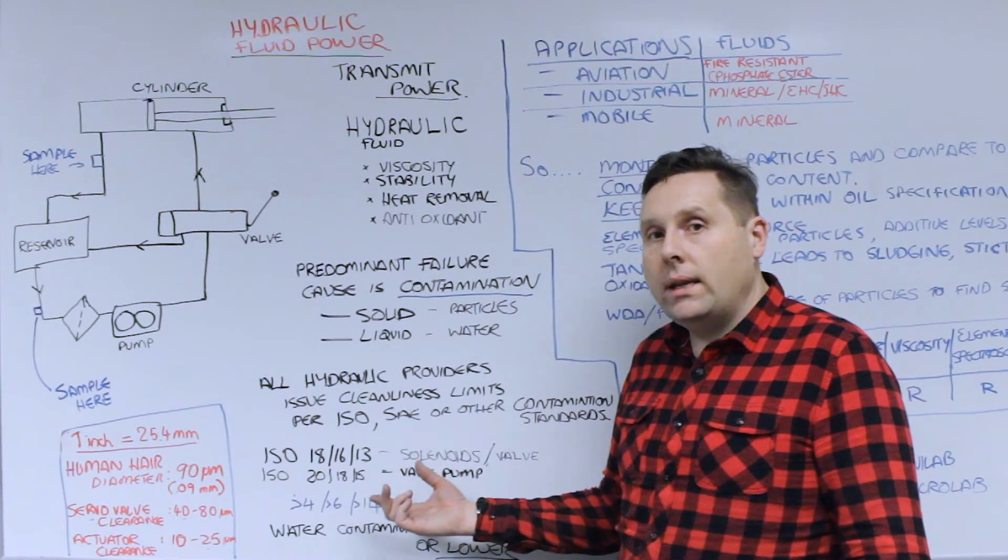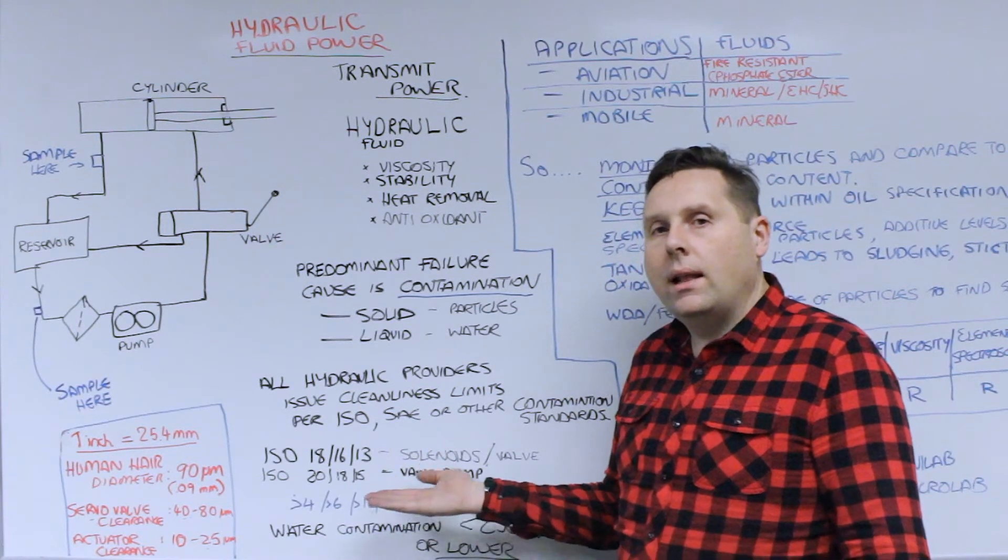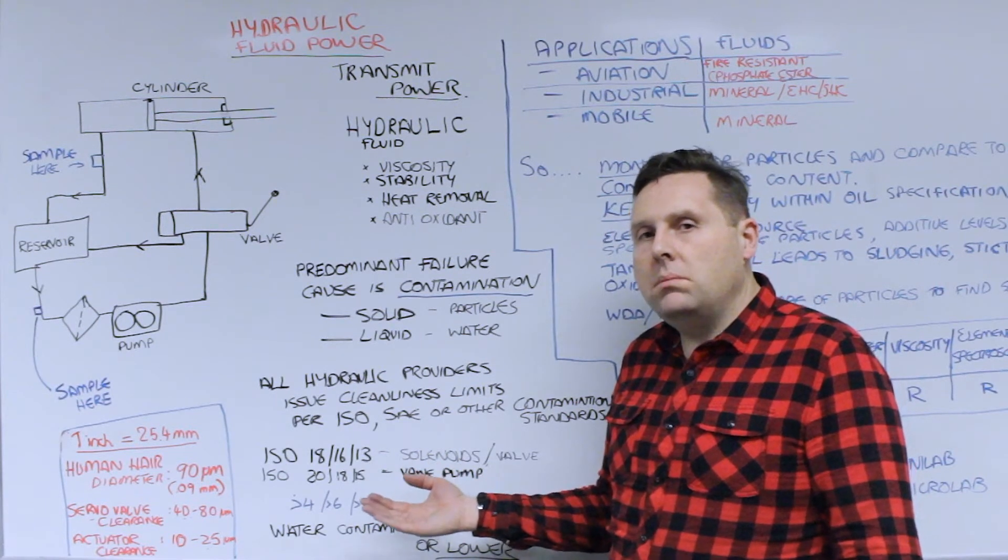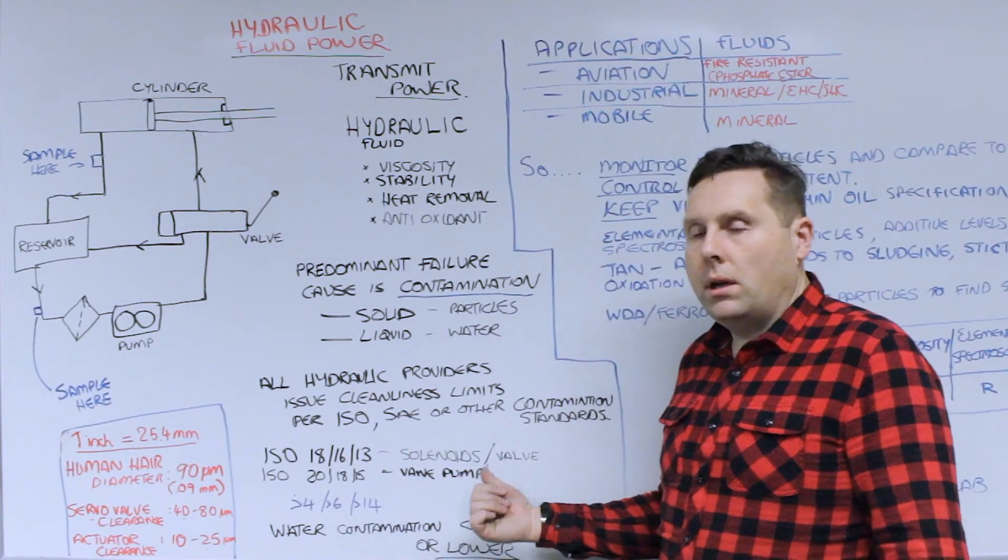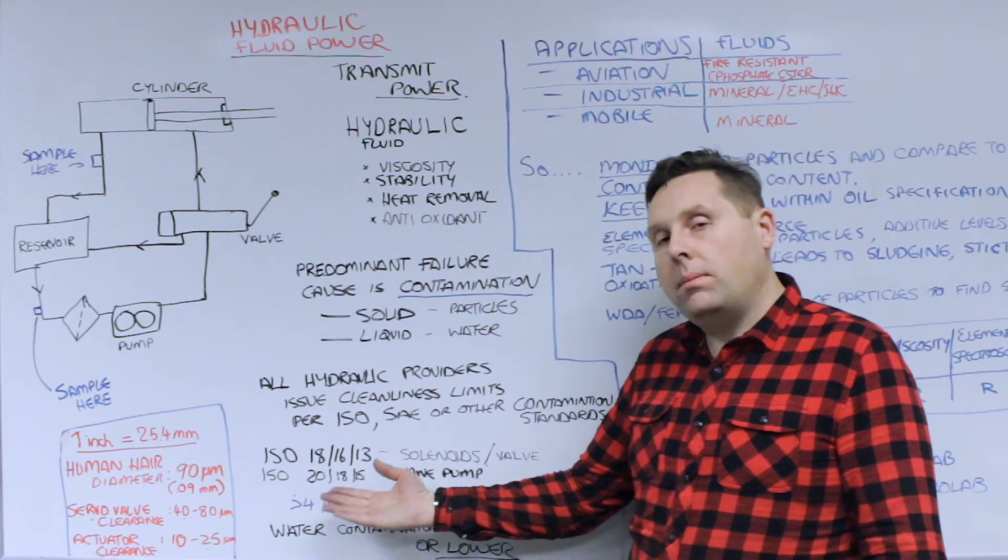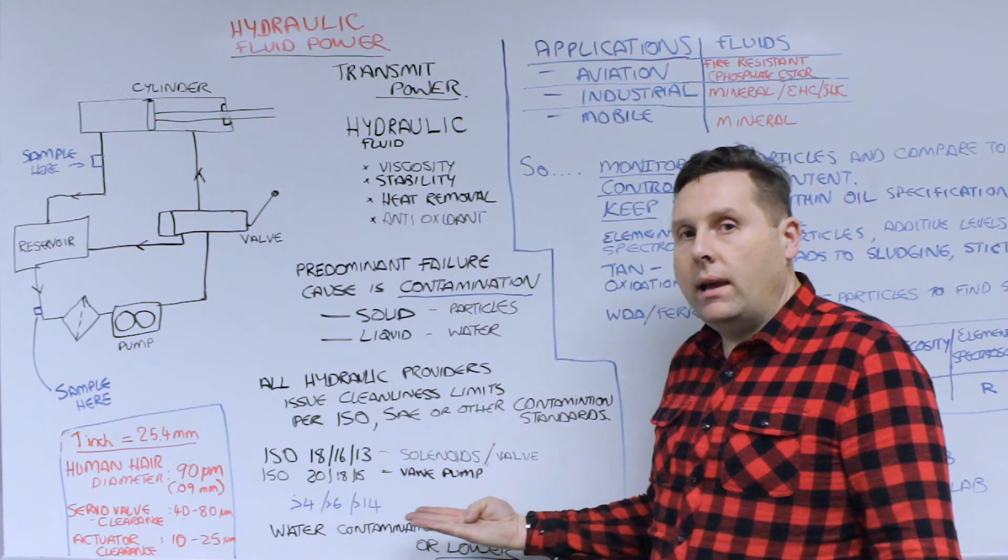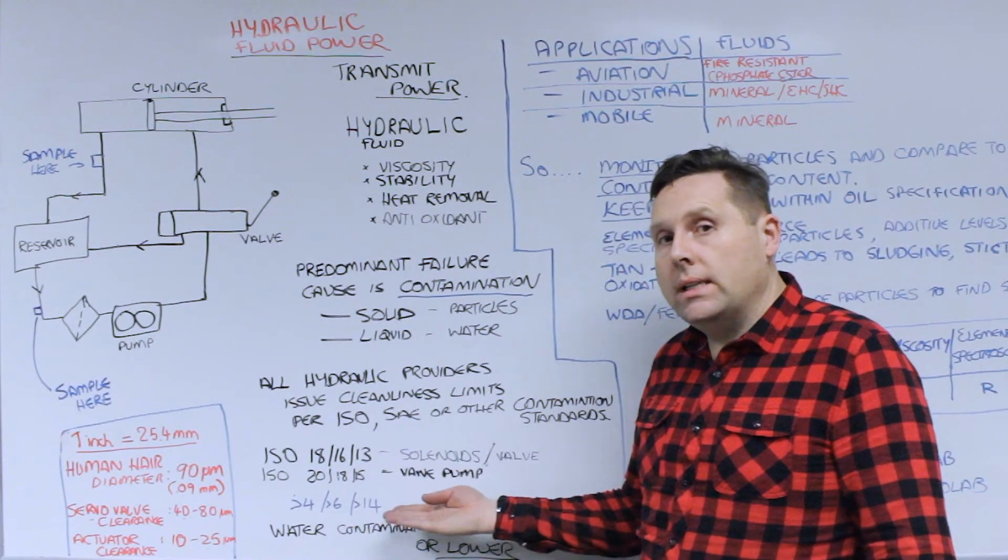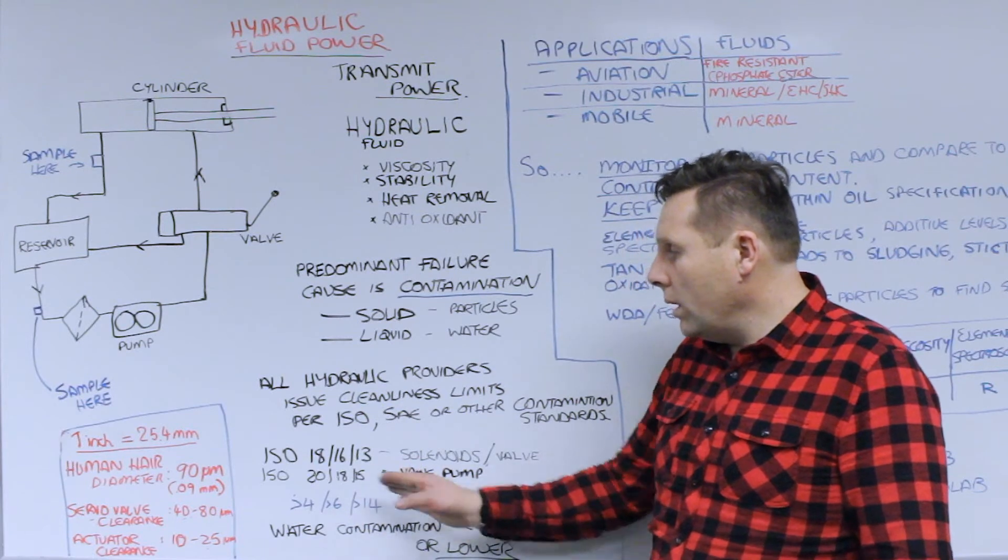Typically if you hear of ISO 18/16/13 that is pretty much a common cleanliness standard that all hydraulic systems need to be below for proper operation. That's important particularly for solenoids and valve systems. Other types of systems may allow for more relaxed levels. A rule of thumb is that the higher the number in all of these classes, the dirtier the system is.